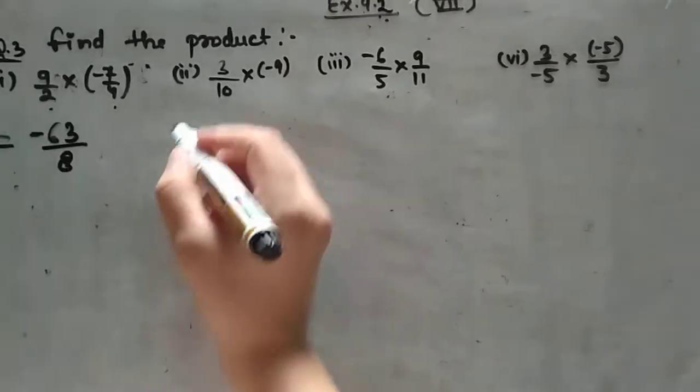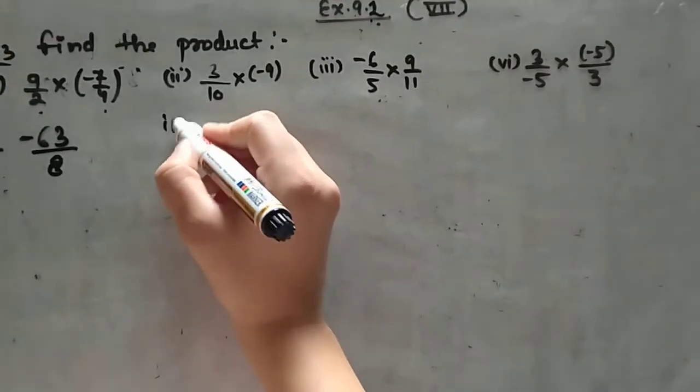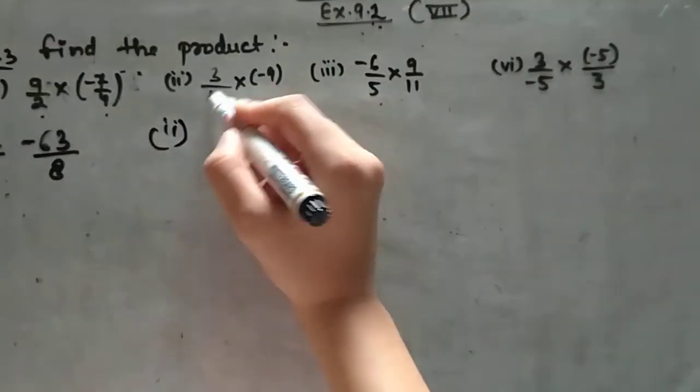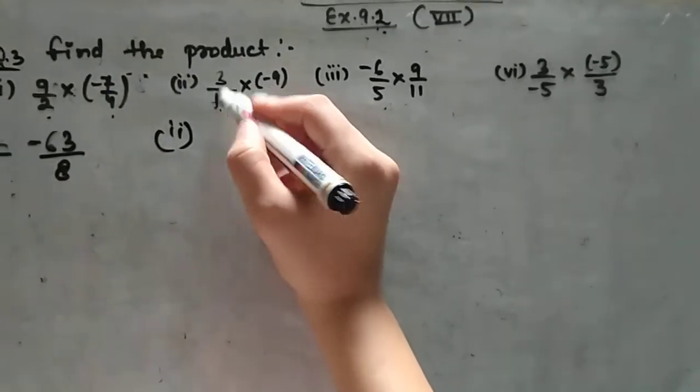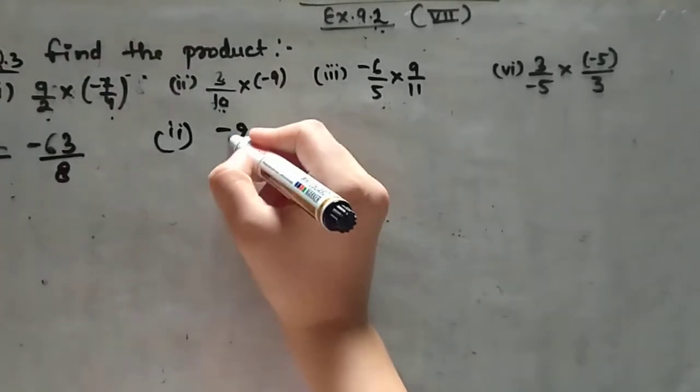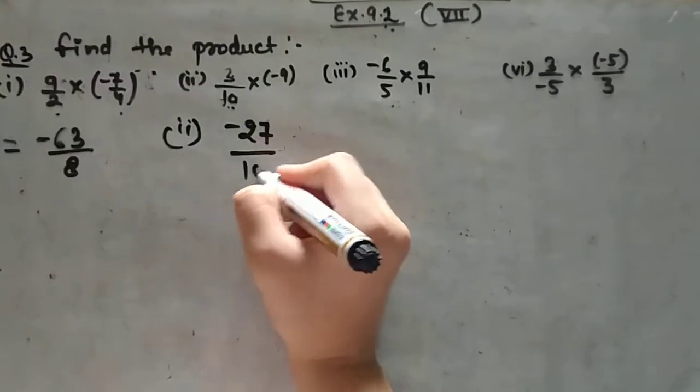Moving to the second part, we check if numerator and denominator cancel. Here it is not happening, so we multiply. The answer is minus 27 upon 10.